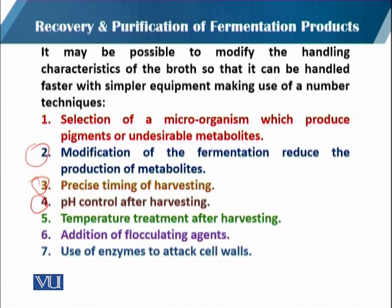Sometimes when we stop the upstream process, we do not pay attention to pH drift. When there is a drift in pH, it can have an adverse effect on the nature of our product. Sometimes the product that is insoluble can become soluble with a change in pH, causing hindrance and increasing the cost of harvesting. After harvesting there is temperature treatment, addition of floculating agents, and the use of enzymes to attack the cell wall.